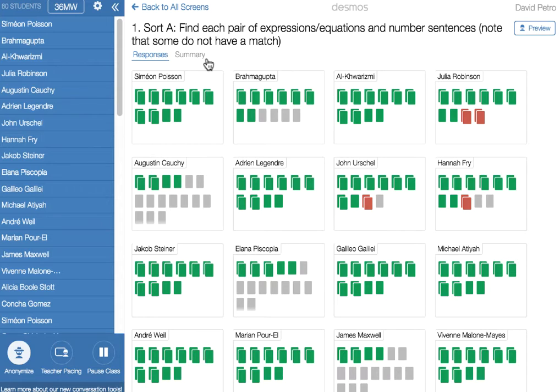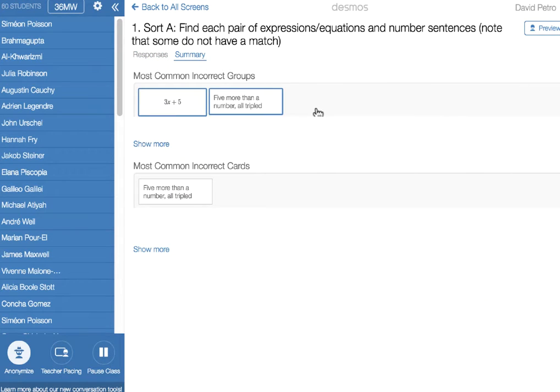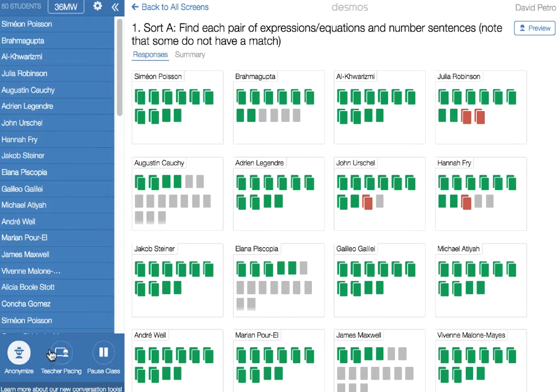One of the neat things here is if you go to summary, it will give you some information like most commonly incorrect groups or most commonly incorrect cards. So that's a neat feature to make use of. And all of the other teacher pacing, pause class, and anonymous are available in this activity as well.